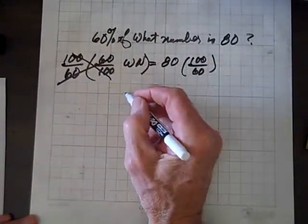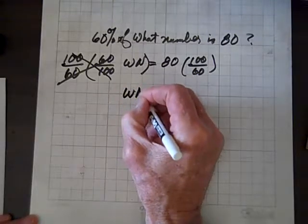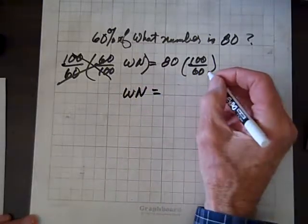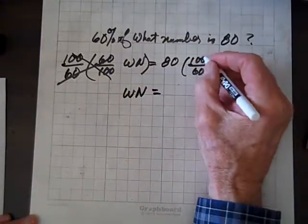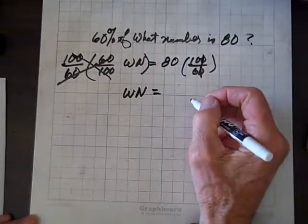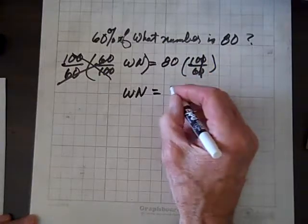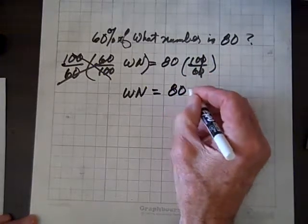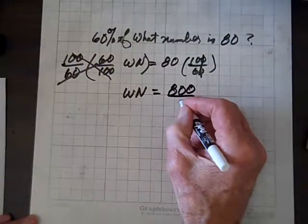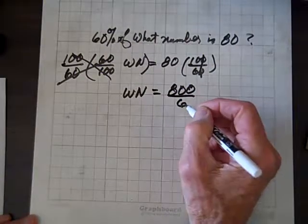And the product of reciprocals is 1, so WN equals. And 1 of these 0's divides out, and so now we have 800. 10 times 80 is 800. Over 6. Over 6.